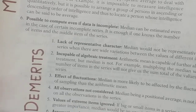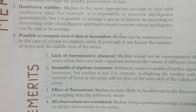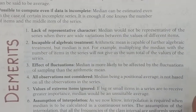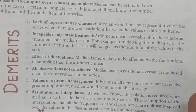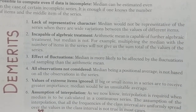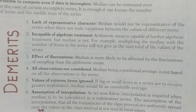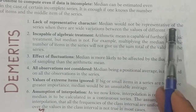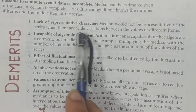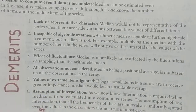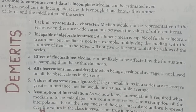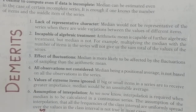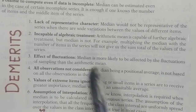Now talking about demerits. Number one: lack of representative character. If we just pick a central value — a middle value — can we say it represents the whole population? No. Median would not be representative of the data when there are wide variations between the values of different items. For example, if some incomes are very high and some very low, the middle-income person cannot represent the whole population.